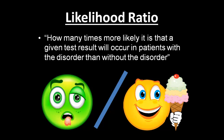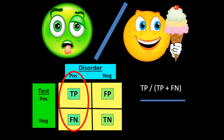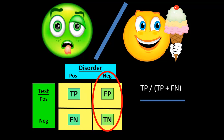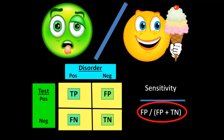If we look at our same 2x2 table: if we have a sick patient — a patient that's positive for the disorder — what are the chances that patient has a positive test result? That's true positives divided by true positives plus false negatives. If we have a healthy patient without the disorder, what are the chances they have a positive test result? That's false positives divided by false positives plus true negatives. True positives divided by true positives plus false negatives — we've seen that number before. That's the sensitivity. And the second number is kind of the opposite of specificity — that's 1 minus the specificity.